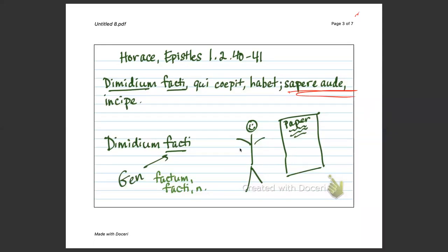So, let's look at Dimidium facti. Half of the deed, or half of the job, half of the achievement. And again, factum. Factum facti neuter. That's the genitive. Partitive genitive.